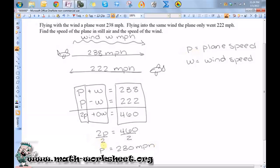Okay, so the speed of the plane, if there were no air current, would be 230 MPH.